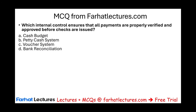Let's take a look at a multiple choice question from farhatlectures.com: Which internal control ensures that all payments are properly verified and approved? The options are: a cash budget, a petty cash system, a voucher system, or a bank reconciliation. All the answer choices are good tools but for different purposes. A cash budget is for planning incoming and outgoing cash to ensure you have enough — it doesn't ensure payments are verified and approved.